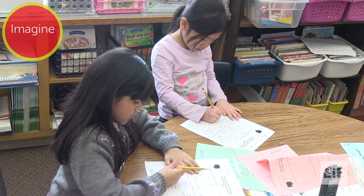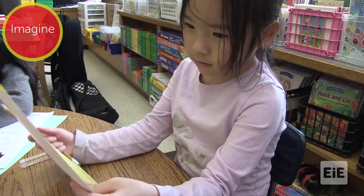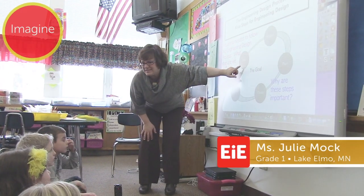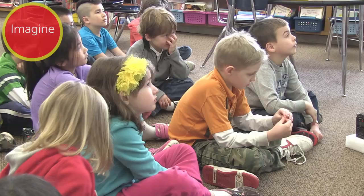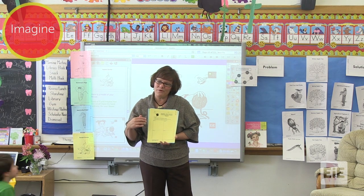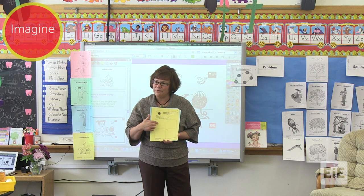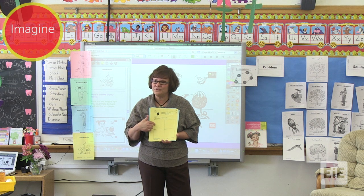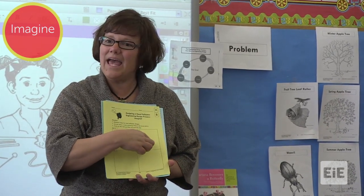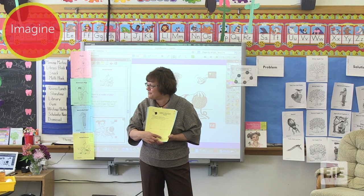In this next clip, first graders are imagining different ways they might move pollen from one plant to another by hand. Their teacher Julie explains what she expects of her young students as they go through the Imagine Step. If we started with ask, where are we today? Imagine. We have four different boxes, and I want you to imagine one way of building a hand pollinator and drawing it right here. Label your pieces and parts so you know what you planned. Then think of different materials and a different way to make a hand pollinator for box number two, and yet a different one for three and another different one for four.